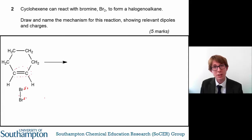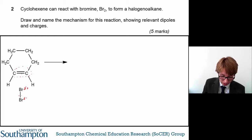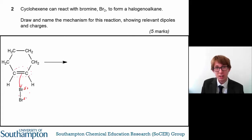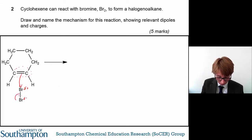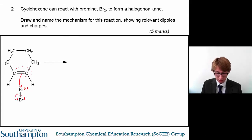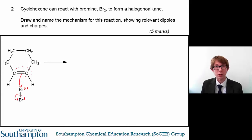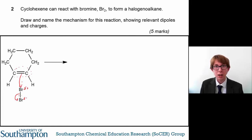This is a similar reaction to question one. The pair of electrons in the double bond attacks the slightly positive bromine, and then that bond breaks. The first curly arrow shows the movement of electrons forming a new bond from the carbon to the bromine. The second shows the breaking of the bromine-bromine bond to form a bromide ion.